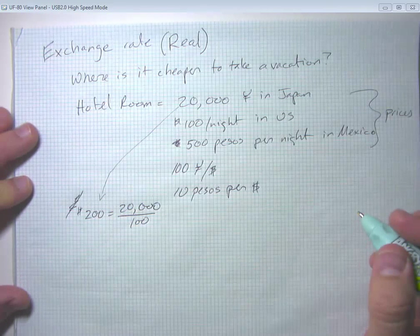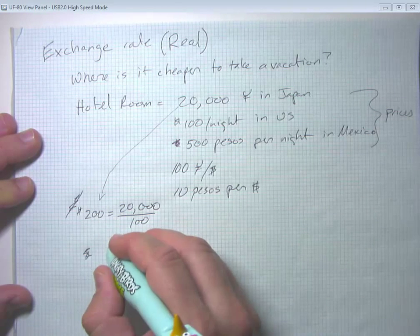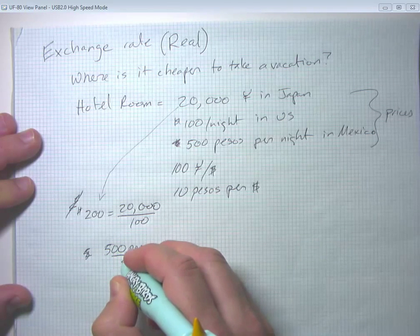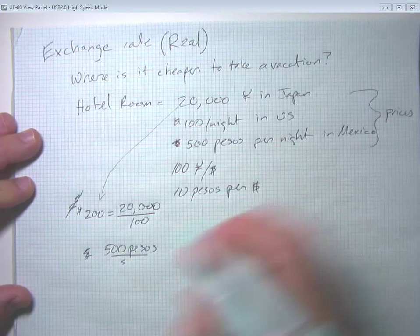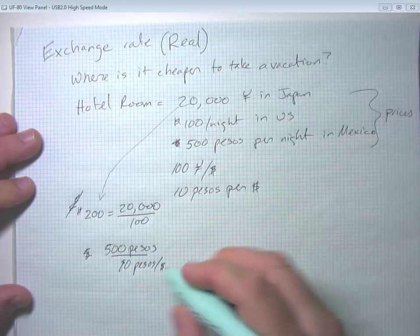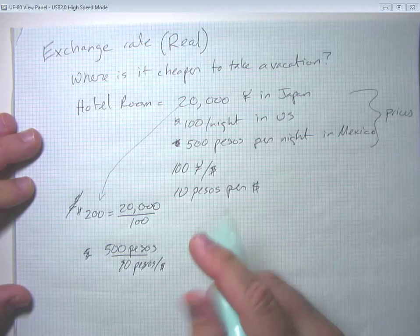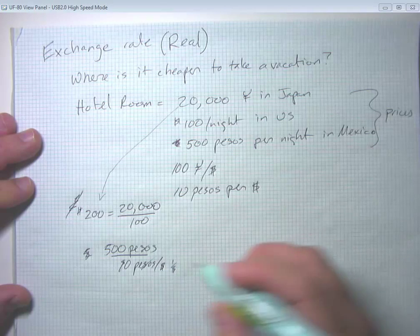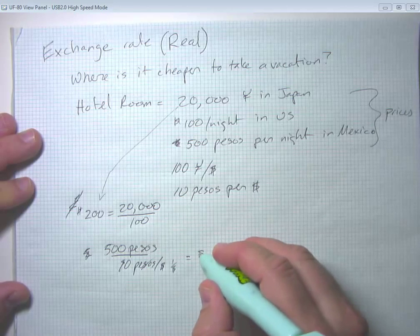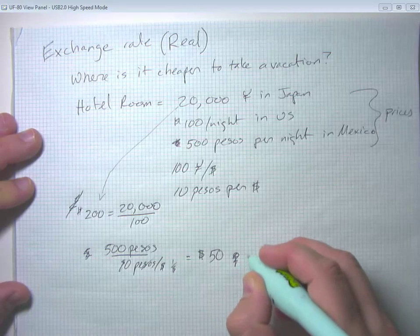And if we go ahead and look at Mexico, we're going to calculate the US prices as 500 pesos over 10 pesos per dollar. And notice the pesos on the bottom and the pesos on the top would cancel out, and we would end up with 1 over a dollar as our unit of measurement on the bottom. And if it's on the bottom of the fraction, it would then come onto the top. So we would go ahead and see that the Mexican price would be equivalent to $50 per night.